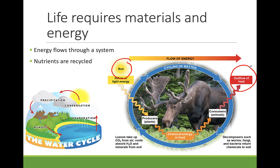Nutrients do not enter and exit — they are always present and recycled through a system. For example, water is a nutrient. Water is recycled by moving through the water cycle, but it is always present on Earth.